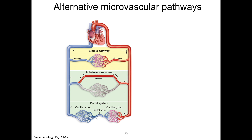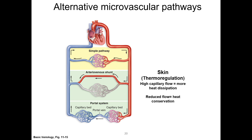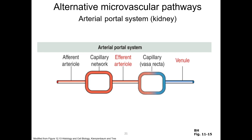There are a number of alternative microvascular pathways. Arteriovenous shunts, or anastomoses, are direct connections between arterioles and post-capillary venules that bypass the microvascular bed. This is used by capillaries in the skin for thermal regulation. Portal systems, which connect two capillary beds with a portal vein, are used in both the liver and pituitary gland, while an arterial portal system is used in the kidney. In the kidney, an arteriole is interposed between two capillary networks — the afferent arteriole gives rise to a mass of capillaries called the glomerulus, and these capillaries form an efferent arteriole, which gives rise to capillary networks surrounding the nephrons. We will look more closely at these alternatives when we study these systems later in the unit.